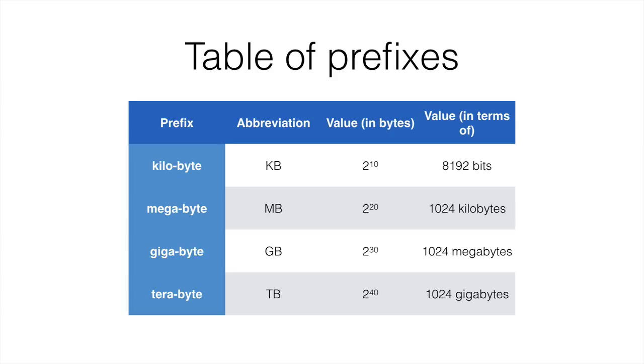So a kilobyte is 2 to the power of 10 bytes. 1 byte is 8 bits. So 2 to the power of 10 times 8 is 8192. So 2 to the power of 10 is 1024.